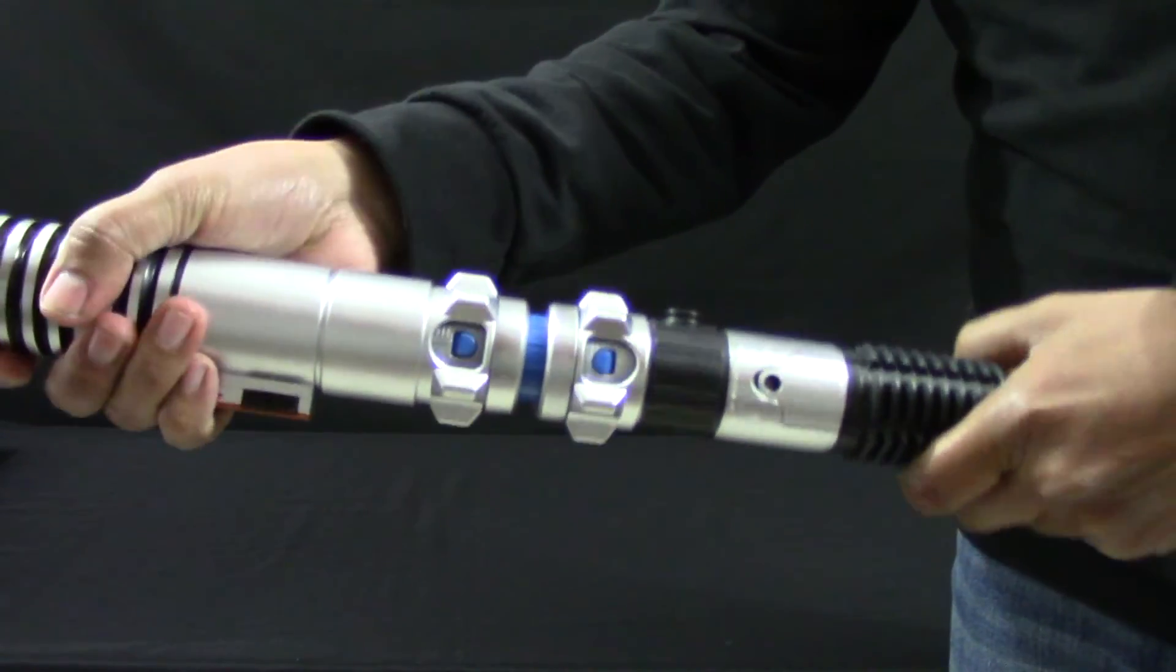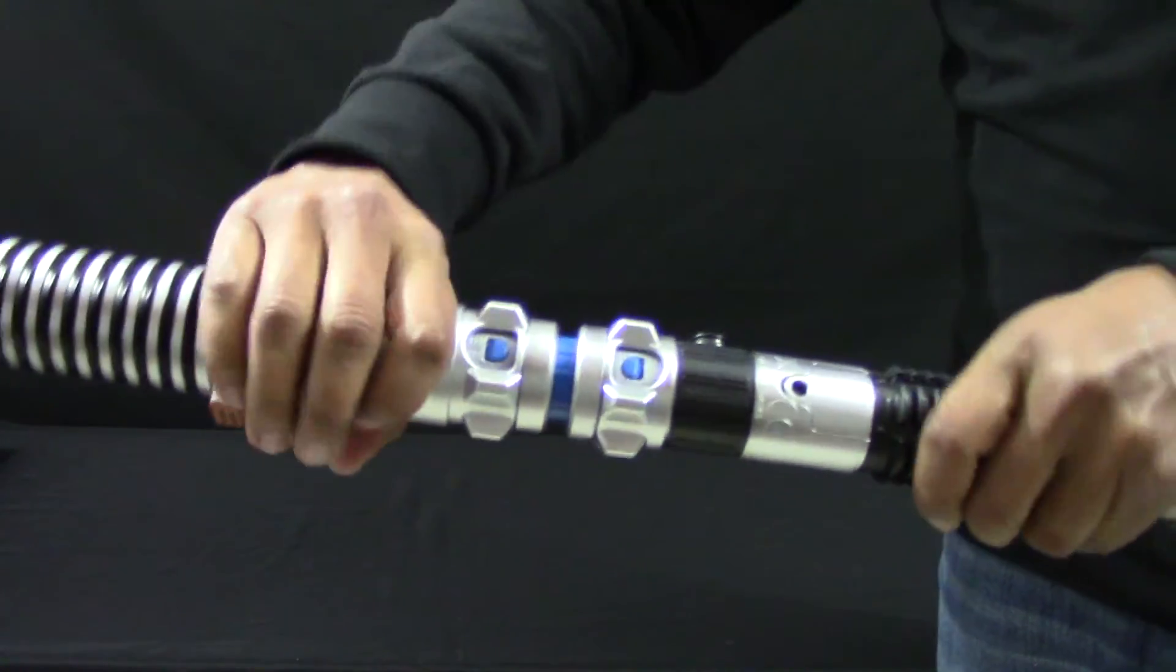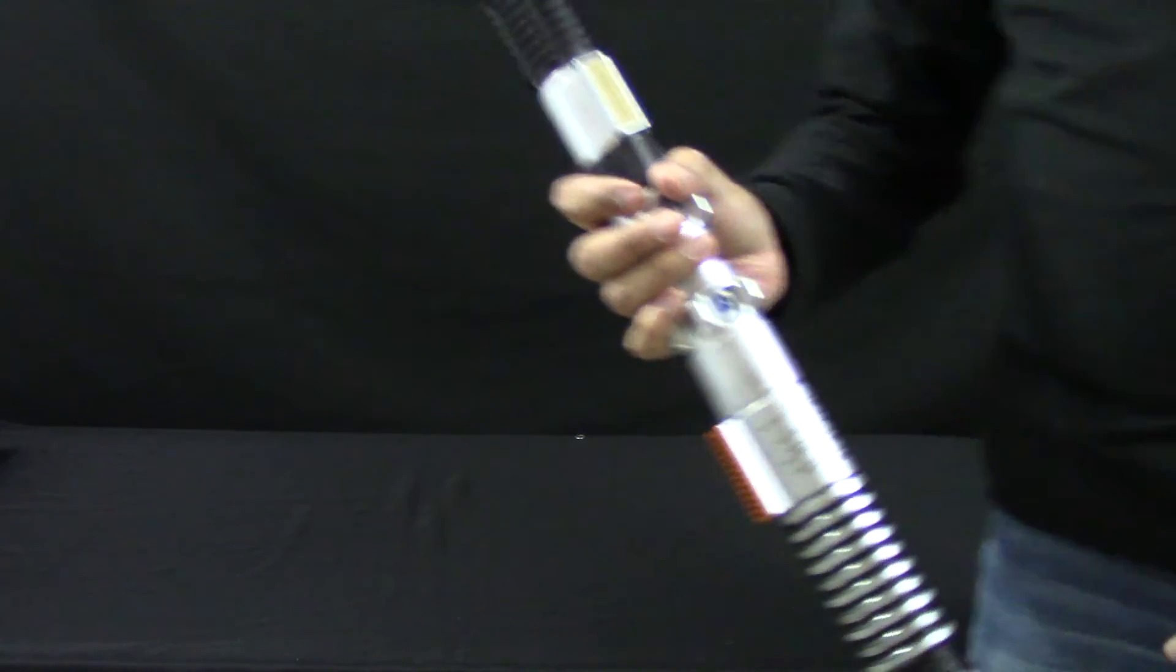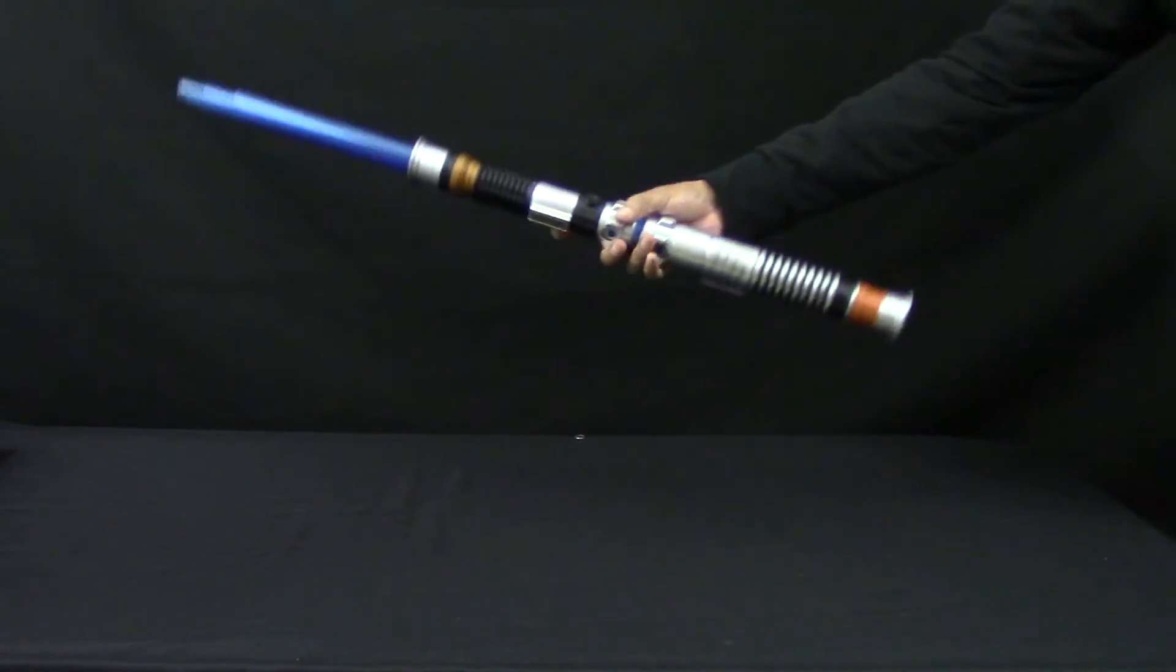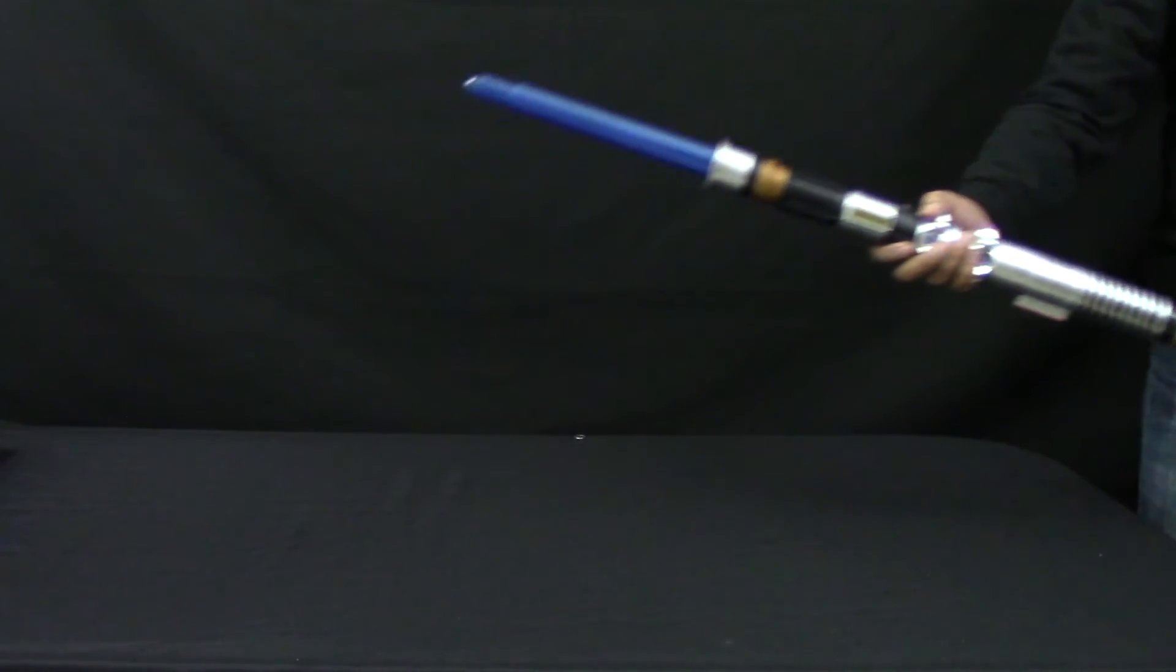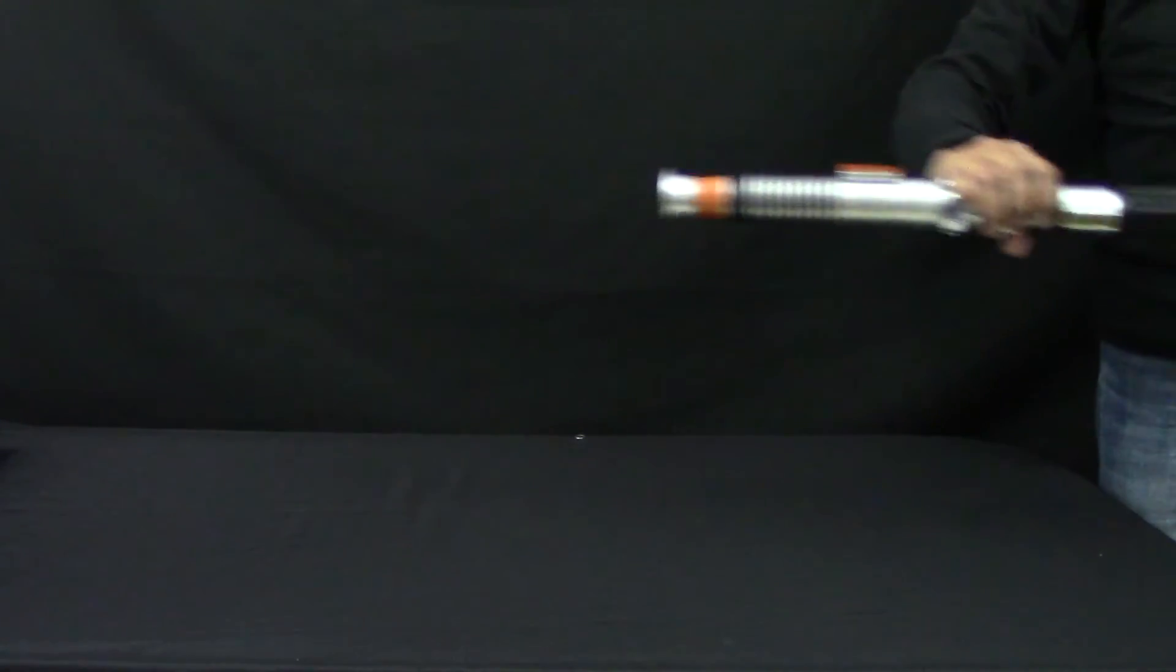Now, both are locked and will not be separated. Our lightsaber looks like this. Let's extend them.